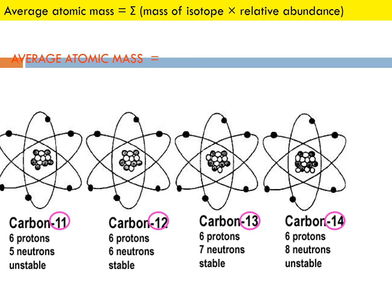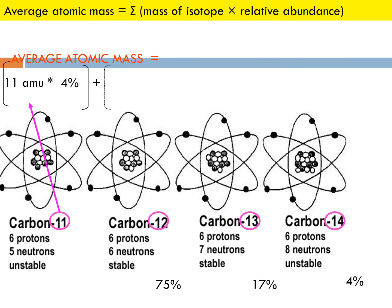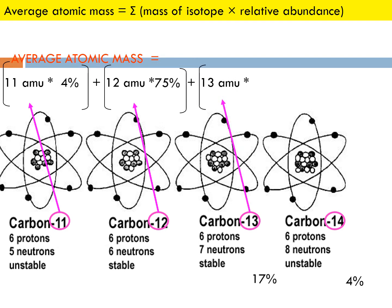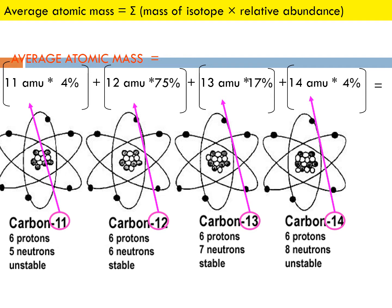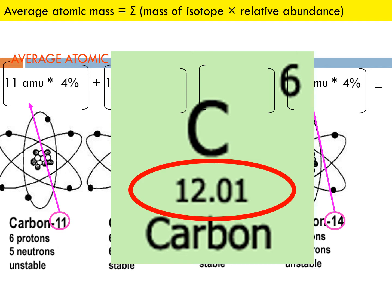Here we have four different carbons: 11, 12, 13, and 14. The most stable are carbon-12 and carbon-13. Find the average atomic mass using the percents: 4%, 75%, 17%, and 4%. So you do 11 times 0.04, plus 12 times 0.75, plus 13 times 0.17, plus 14 times 0.04. Add everything up — make sure the percents are in decimal form — and you should get 12.01 as the average atomic mass of carbon.